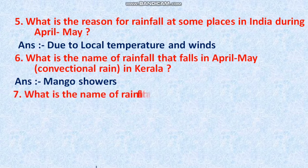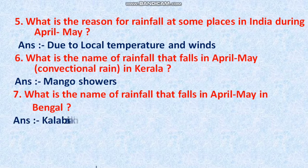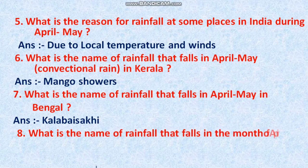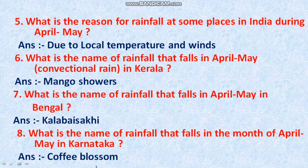Question 7: What is the name of the rainfall that falls in April and May in Bengal? In Bengal, this rainfall is called Kalbaisakhi. Question 8: What is the name of the rainfall that falls in April and May in Karnataka? In Karnataka, it is called Coffee Blossoms. This rain mainly affects Karnataka.